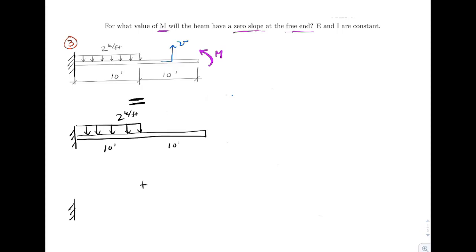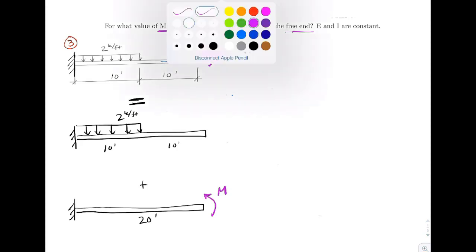My structure two is going to be the exact same beam, the 20 foot beam. And on the end of that one is the purple M, the unknown applied external load.